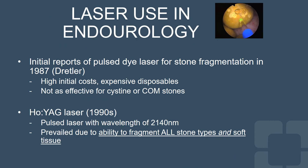Initial reports of pulsed dye laser for stone fragmentation occurred in 1987. However, these units faced high initial costs, expensive disposables, and they were not as effective for cysteine or calcium oxalate monohydrate stones, which are the denser stones. The holmium YAG laser was later introduced in the 1990s as a pulsed laser with wavelengths of about 2,000 nanometers, and prevailed due to its ability to fragment all stone types and also ablate soft tissue.